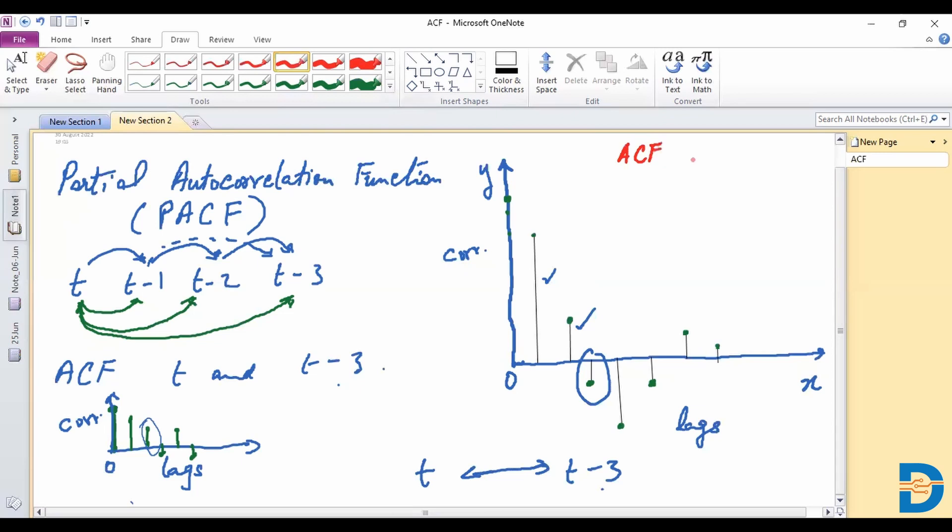ACF is good for identifying the order of a moving average model and the PACF identifies the order of an autoregressive model.